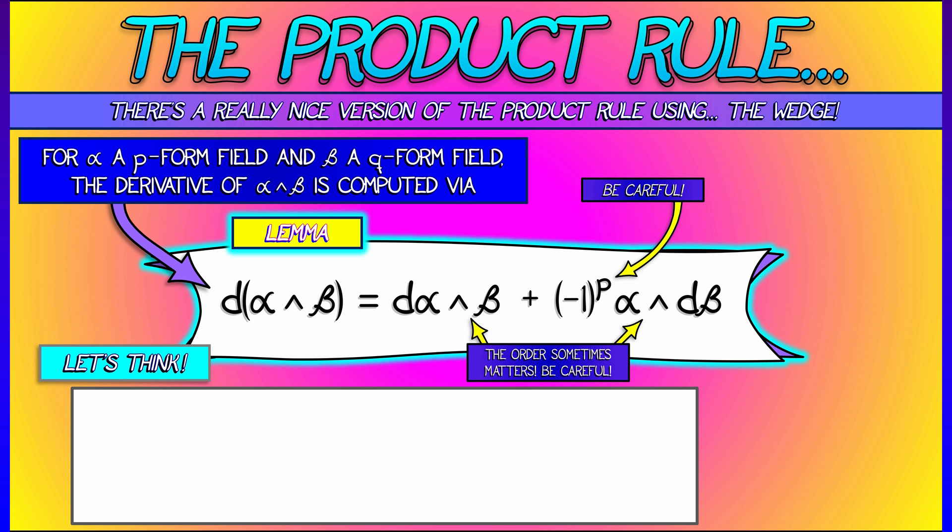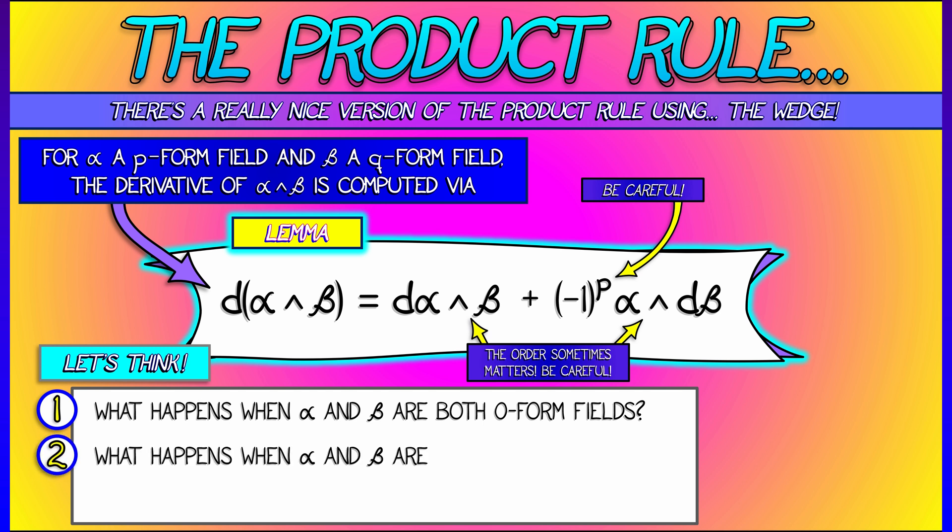Is this a weird kind of formula? Maybe not. What happens when alpha and beta are both zero-form fields? Then this wedge product is just multiplication. And since p is zero, that negative 1 to the p goes away. You recover the plain vanilla product rule that we learned in single-variable calculus.